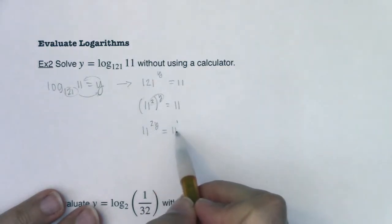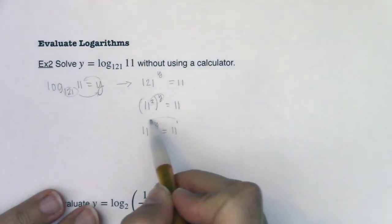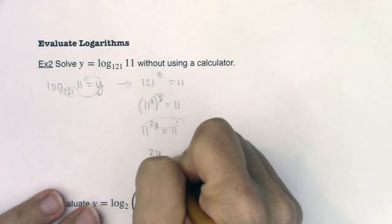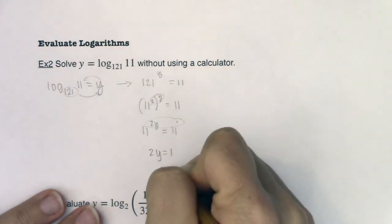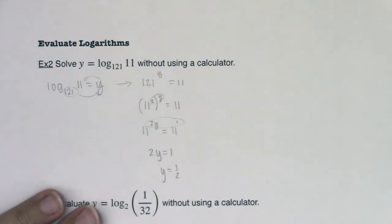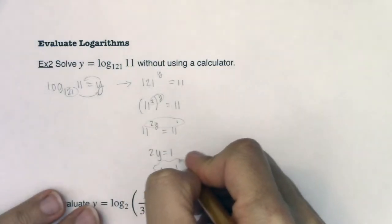And when you have two powers that are equal to each other, and their bases are the same, then by default their exponents have to be the same. So from here I can simplify this to just say, well, 2y has to equal 1, or y has got to equal 1 half. So there I am solving for y.